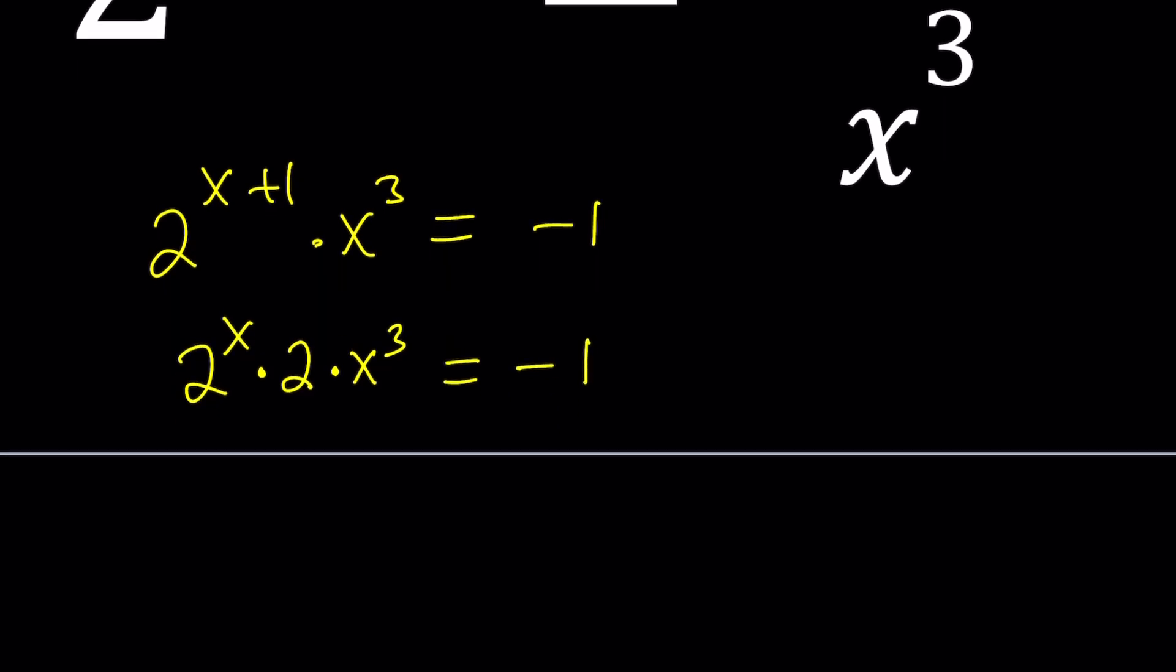Now let's cube root both sides. I want to get x to the first power, so let's raise both sides to the power 1 third. This gives me 2 to the power of x over 3, because when we cube root something, we divide the power by 3. Then x cubed becomes x, and 2 becomes the cube root of 2. The cube root of negative 1 is just negative 1. We're thinking in the real sense.